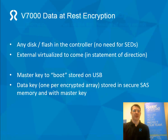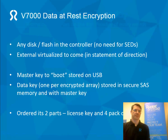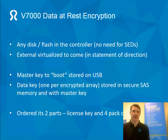How does it work? There's a master key required to boot the system, and that's stored on a USB drive at the back of the controller. There's also a data key — one per RAID array — stored securely in memory, with a copy held on the master key. If you order the V7000 with encryption, it comes with a license key and a pack of USB keys. You can add encryption to an existing V7000 later; the caveats are that it must be Gen 2 hardware and you need to be on the latest code level, which you can upgrade to for free.